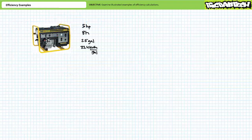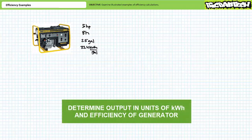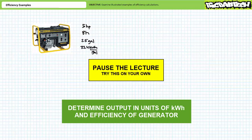Our next problem features a 5 horsepower generator that runs at full capacity for 8 hours a day and in doing so consumes 2.5 gallons of gasoline. Assuming a gallon of gasoline contains 33.4 kilowatt-hours of energy, see if you can determine the usable electrical energy output and efficiency of the generator. Pause the lecture and try this on your own.